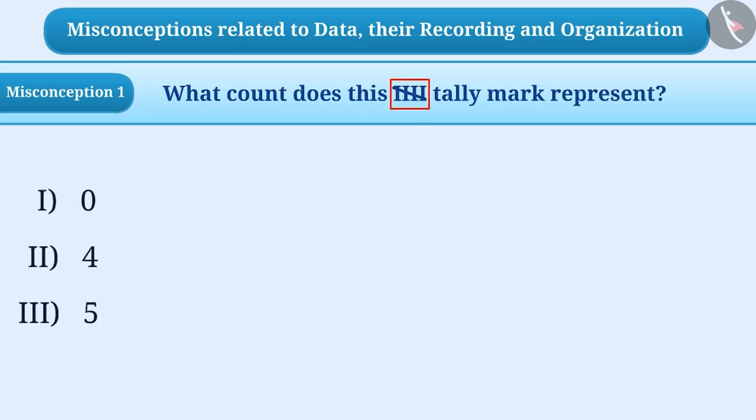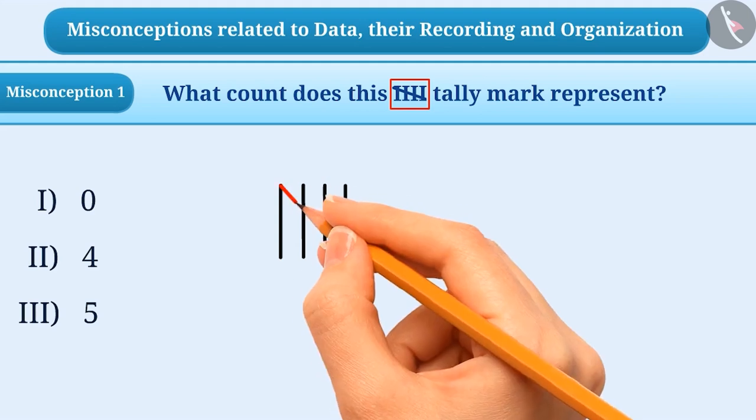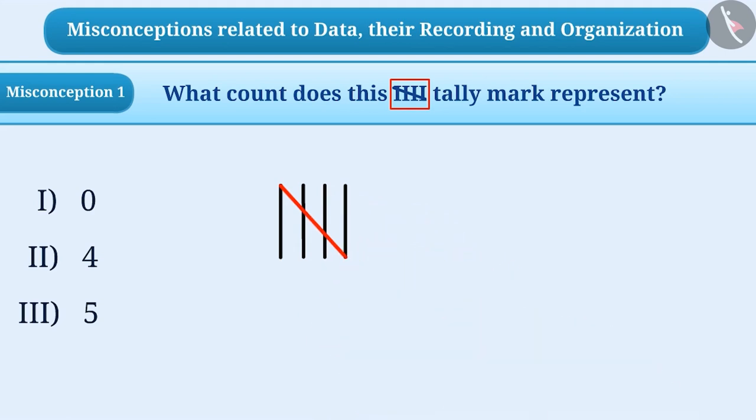The tally mark shown here has a slant line drawn on four straight lines. When the lines are drawn diagonally, some children feel that the lines have been cut. That is, these tally marks are not to be counted. Hence, they don't count this tally mark and select the first option, which is the wrong answer.